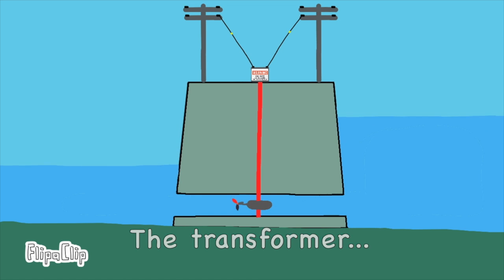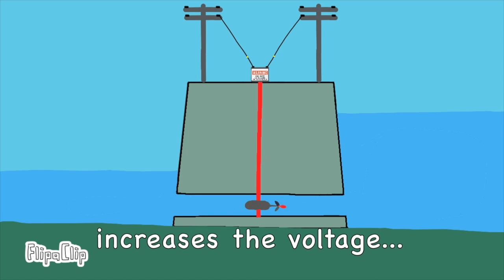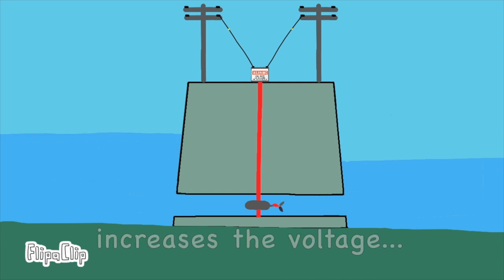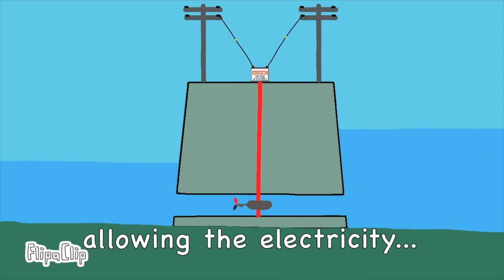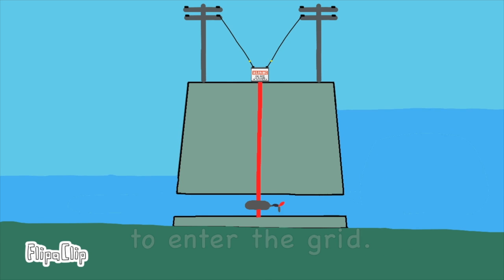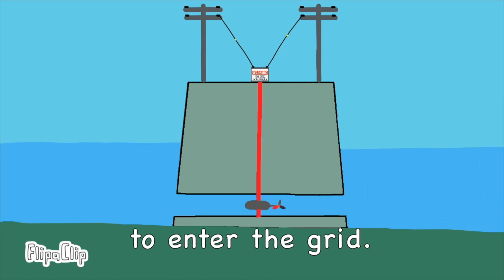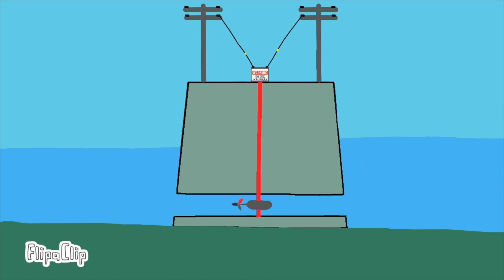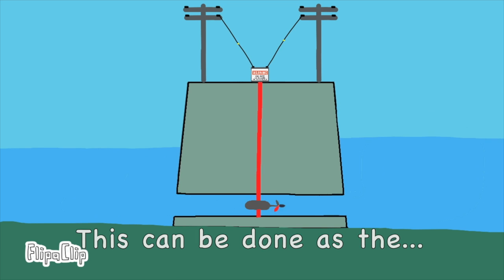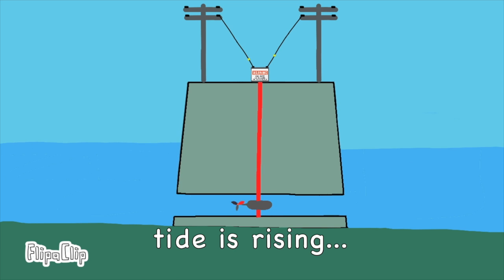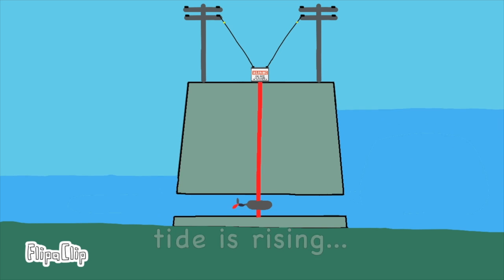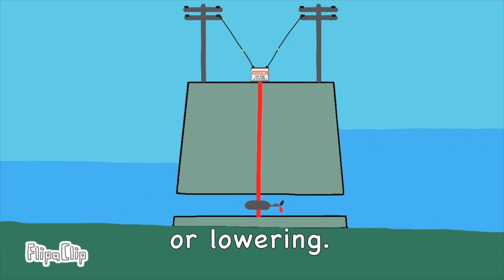The transformer increases the voltage, allowing the electricity to enter the grid. This can be done as the tide is rising or lowering.